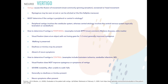Vertigo causes an illusion of movement, most commonly a sensation of spinning, and is always worsened with head movement. Nystagmus may be seen at rest or elicited with the Dix-Hallpike maneuver. Our key goal is determining whether vertigo is peripheral or central in etiology. Central vertigo relates to an issue with the central nervous system — generally the brainstem or cerebellum — and is not managed in primary care. Peripheral vertigo may be managed in primary care depending on the type.